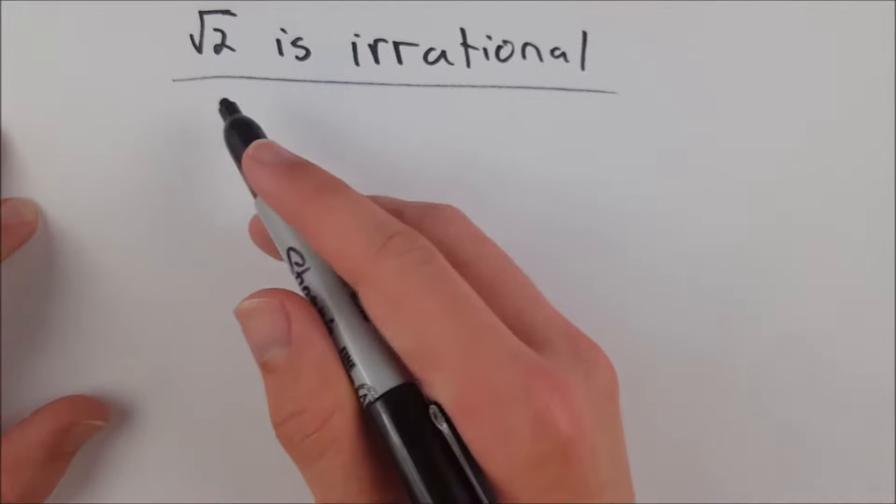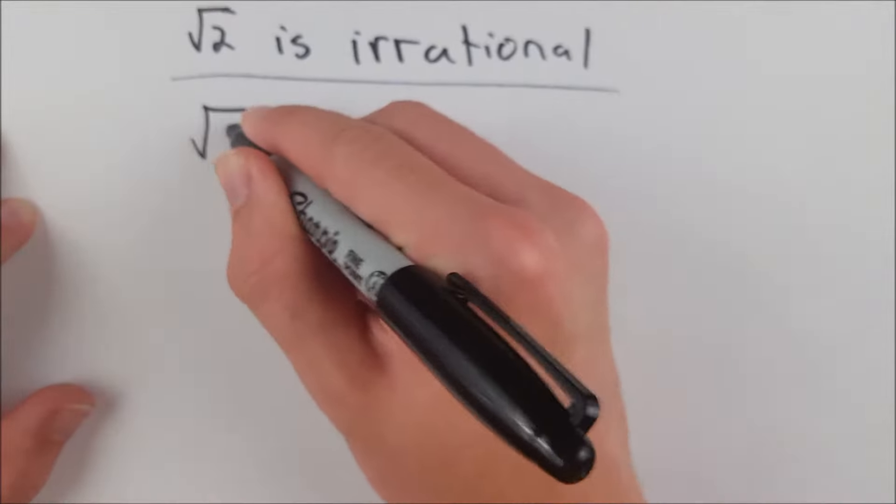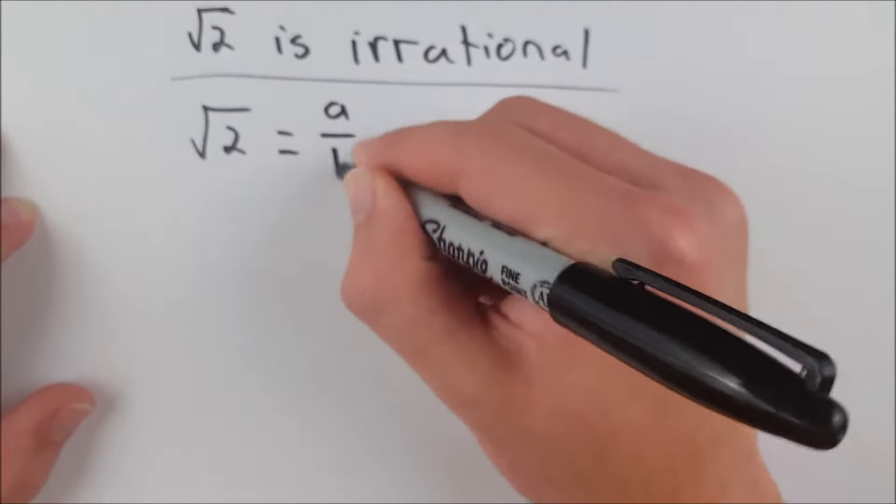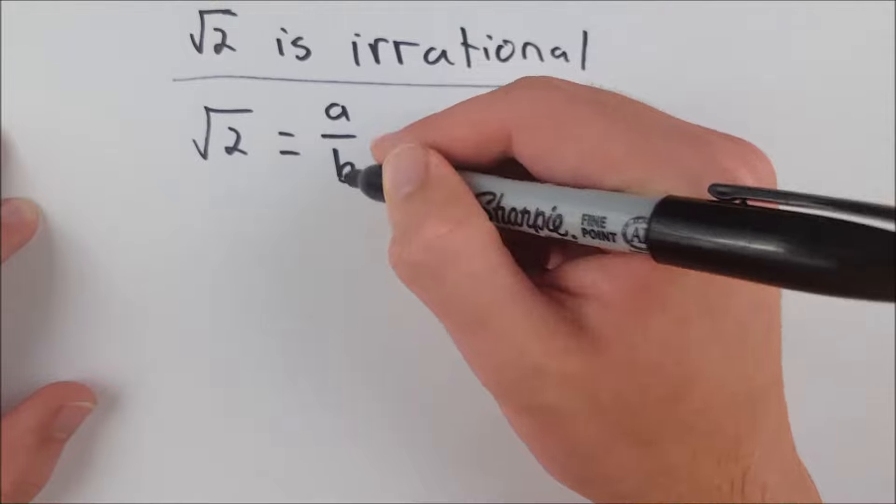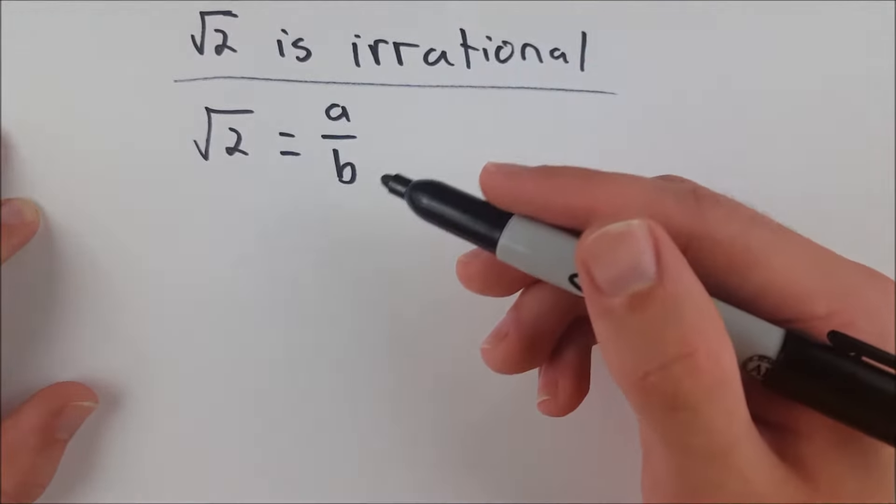Let's suppose for the sake of contradiction that the square root of 2 is in fact rational. Well in that case, then square root of 2 is equal to a over b for some integers a and b where b is not equal to 0. Of course that's the definition of rationality.